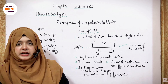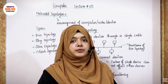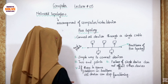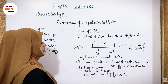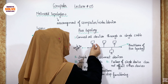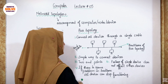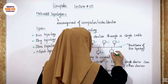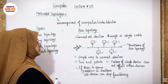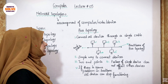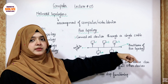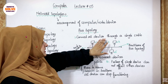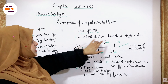Bus topology is a simple way. We can connect multiple devices using a single communication medium — this is the cable through which we transmit our data. Looking at this diagram, I have nodes n1, n2, n3, n4, n5 — 5 nodes connected with a single communication cable. We have a single communication cable connected with multiple devices. This type of topology is called bus topology.